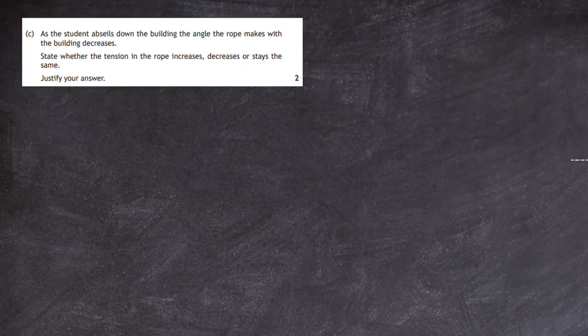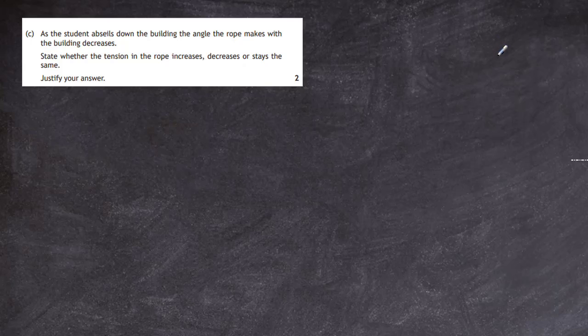Question 2C, as the student abseils down the building, the angle the rope makes with the building decreases. State whether the tension in the rope increases, decreases or stays the same. And you must justify your answer. So make the statement and then justify it by using some maths or by using a diagram to back up what your statement is. Now there's two methods of doing this. We'll look at the route one method and that's just by looking at the maths.